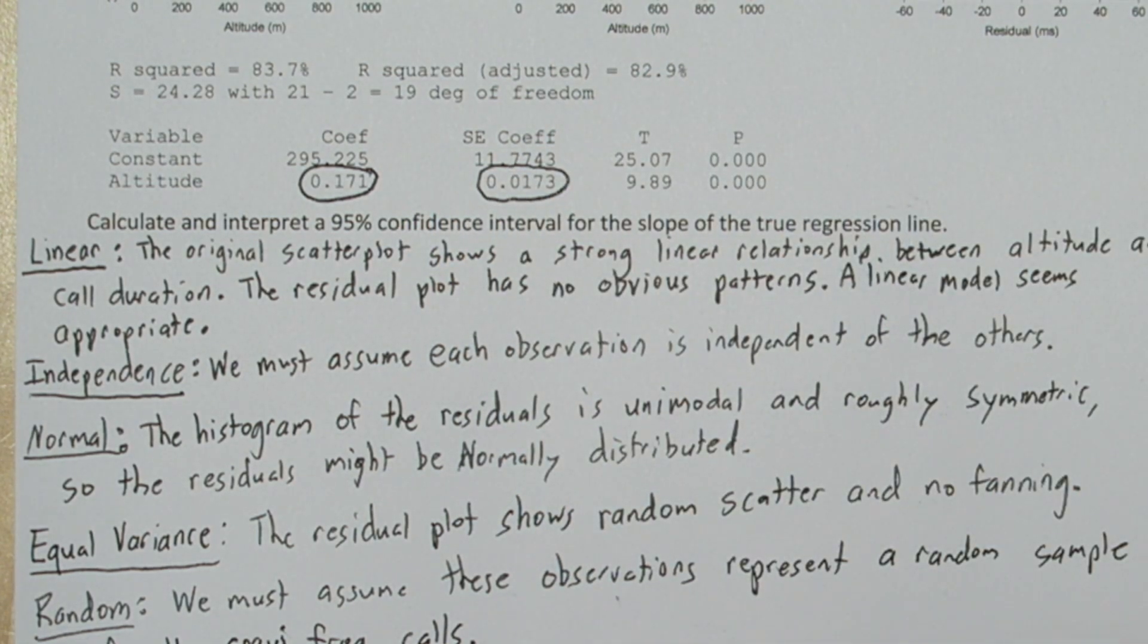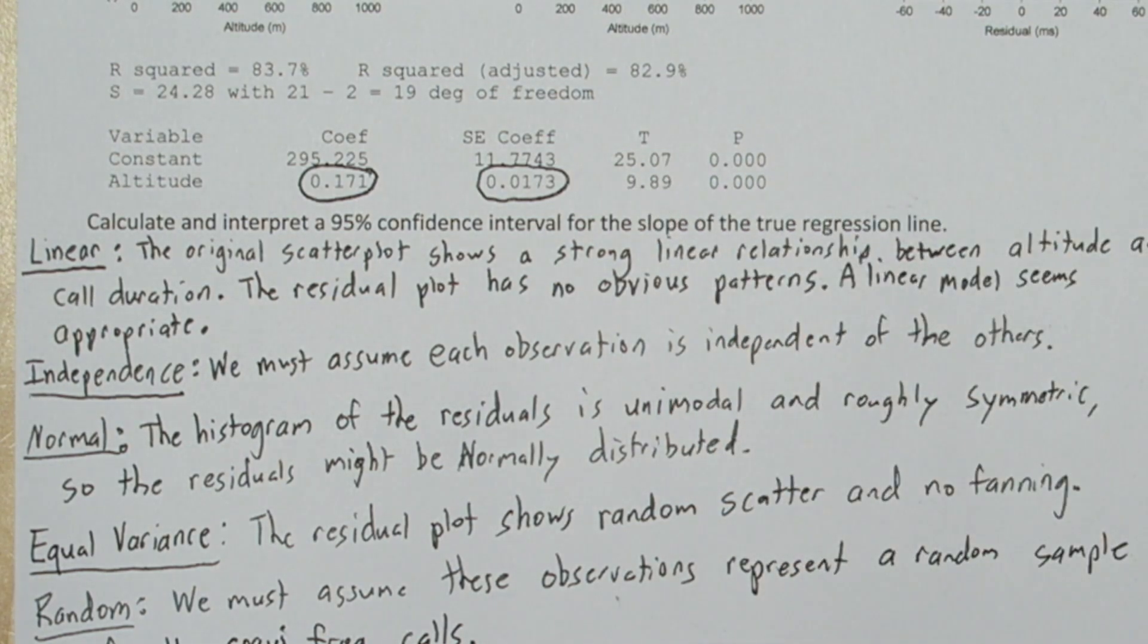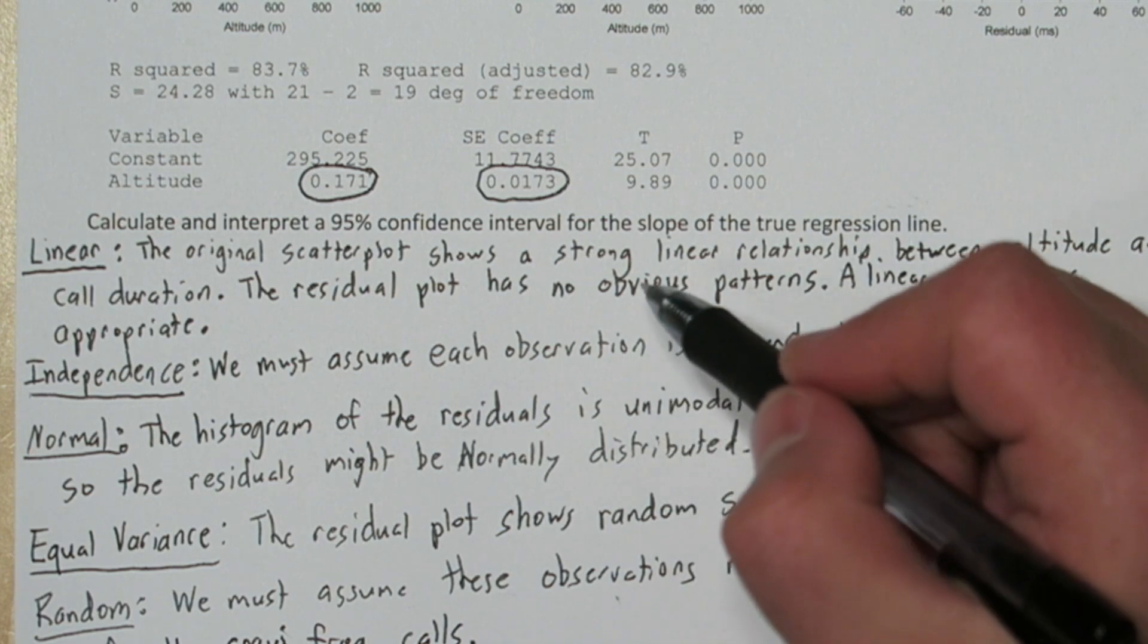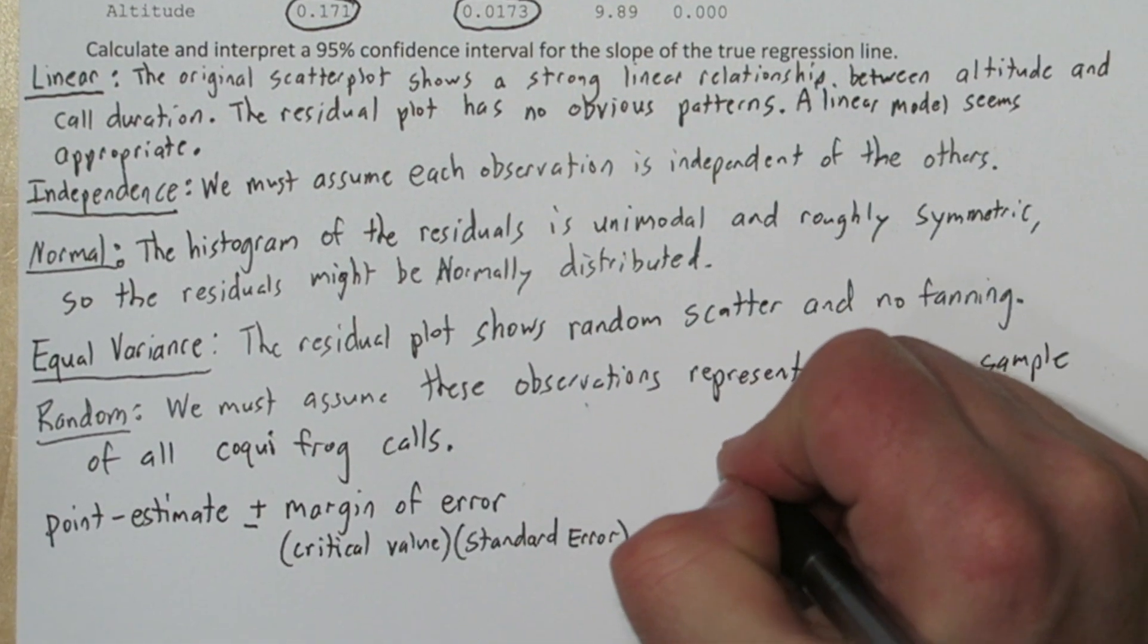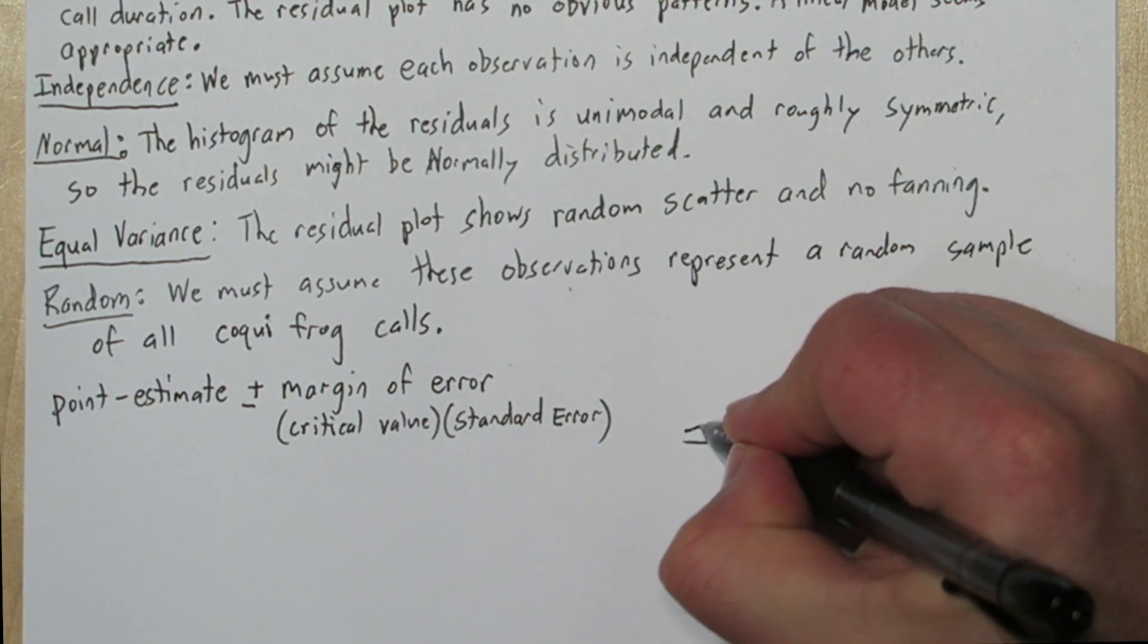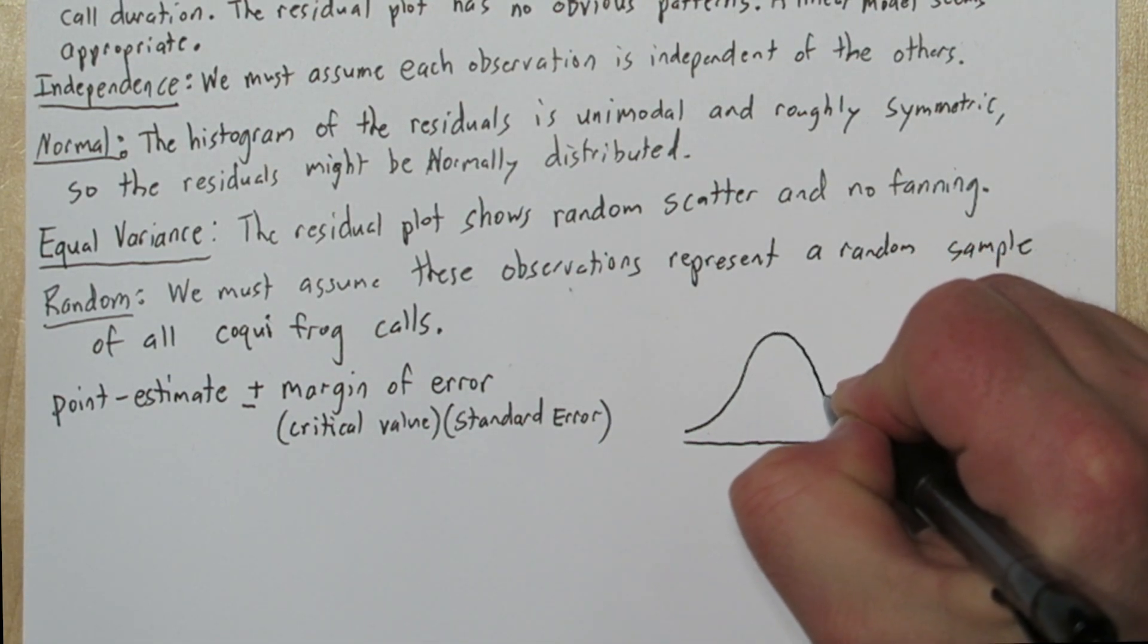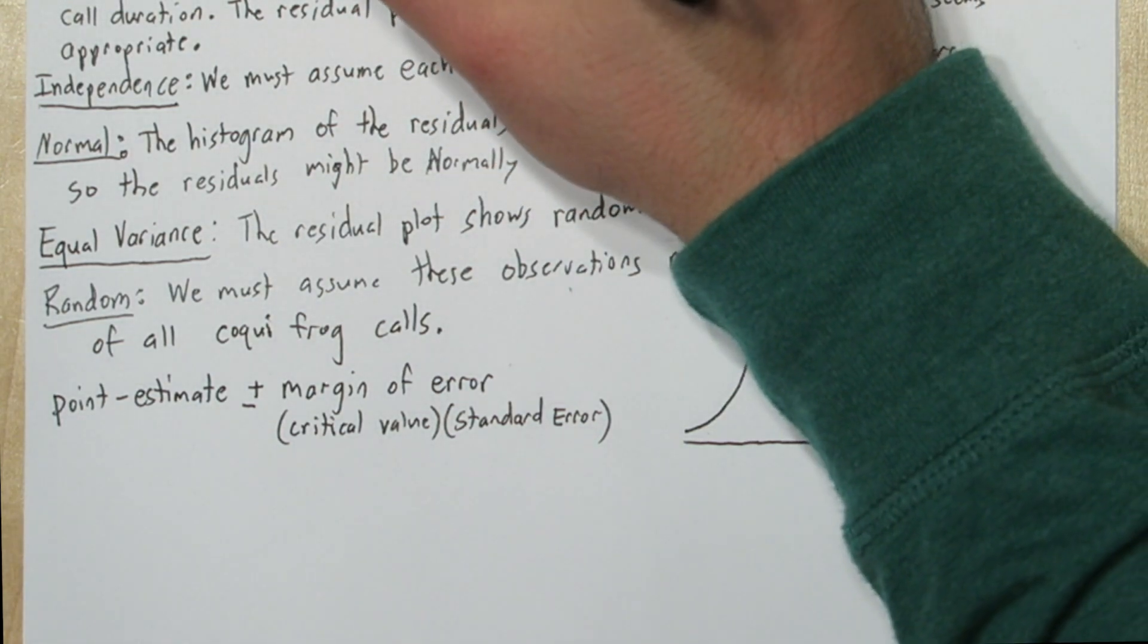Now one mistake a lot of students make is they think that this T right here is our T star, our critical value. It's not. This is the T associated with the significance test for if a slope exists. We have to calculate our T star using inverse T. Now from our computer output, we know we have 19 degrees of freedom. So our sample size must have been 21, and then we subtract 2 from it to get our 19 degrees of freedom.